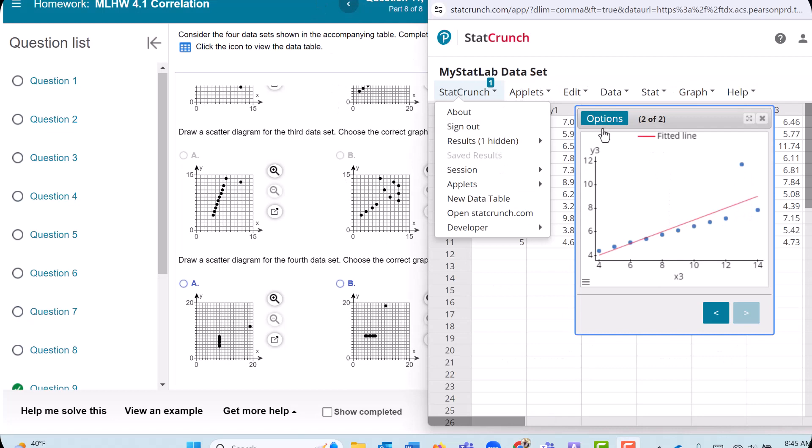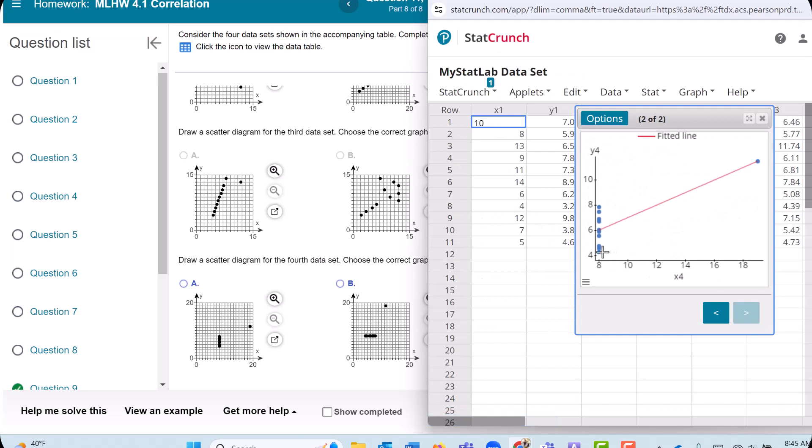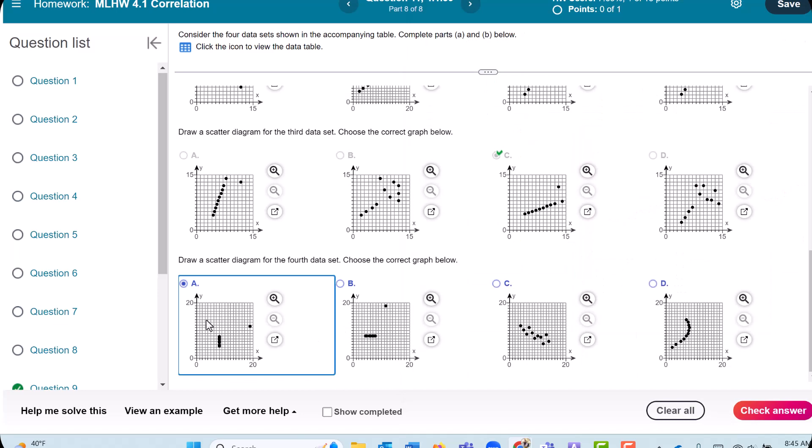And then the last one. Going to go to Options and Edit, and now choose X4 and Y4. Go to Next. So we have all the points here at 8, except for this one guy right here. That looks like around 19 or so. So which one does that look like? Looks like A right here. Check Answer.